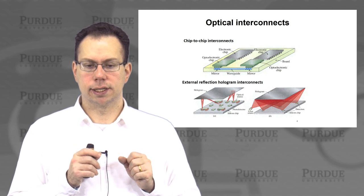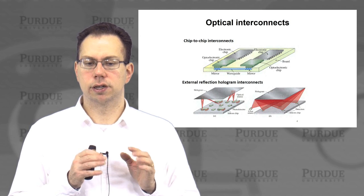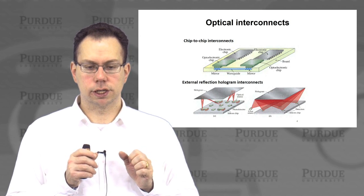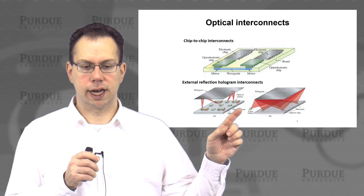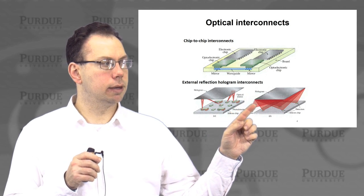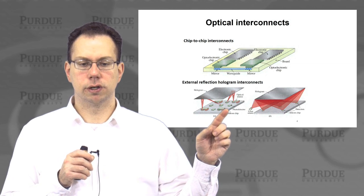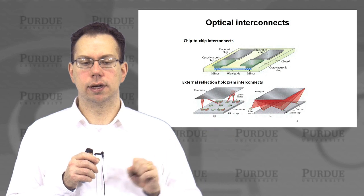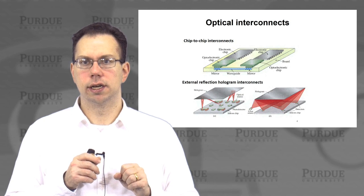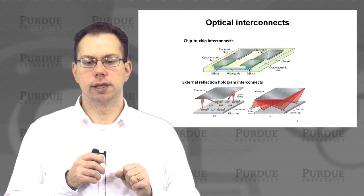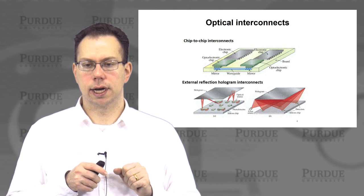Another type of technology that is not as far along in terms of commercialization, but also interesting, is an external reflection hologram-based approach, where essentially you would have a bunch of silicon chips and optoelectronic or 3-5 type chips, and these are being connected via holograms to one another. So as opposed to using waveguides, the holograms are basically creating the waveguiding. The potential advantage is that you can easily reconfigure this by changing the hologram, and there are a lot of strategies to do that, such as lithium niobate voltage-based tuning.